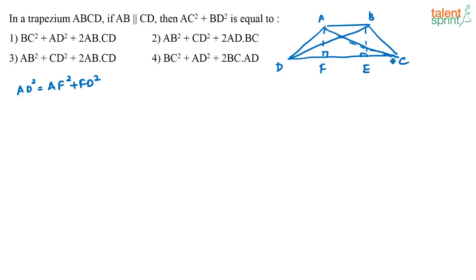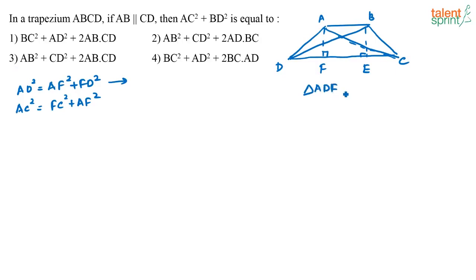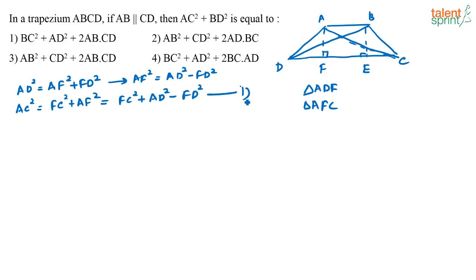If I consider triangle AFC, I can say AC squared is equal to AF squared plus FC squared. From the first statement, AF squared equals AD squared minus FD squared. Substituting that here, AC squared equals FC squared plus AD squared minus FD squared. So this is one equation.